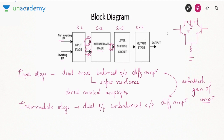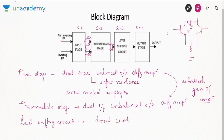The third stage is a level shifting circuit. Those who have studied multi-stage amplifiers are aware of the disadvantage of direct coupling. Since we directly connect the output of the first stage to the input of the second stage with no components involved, the signal passing from one stage to the other consists of both DC as well as AC signal. If we had used a coupling capacitor, the capacitor would act as open circuit for DC and stop it from passing.